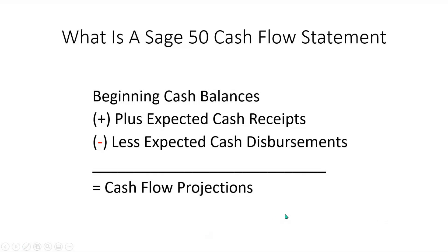What is the Sage 50 cash flow statement? A cash flow projection statement consists of three main parts: the beginning cash balances, plus expected cash receipts, less expected cash disbursements, equals our cash flow projections.